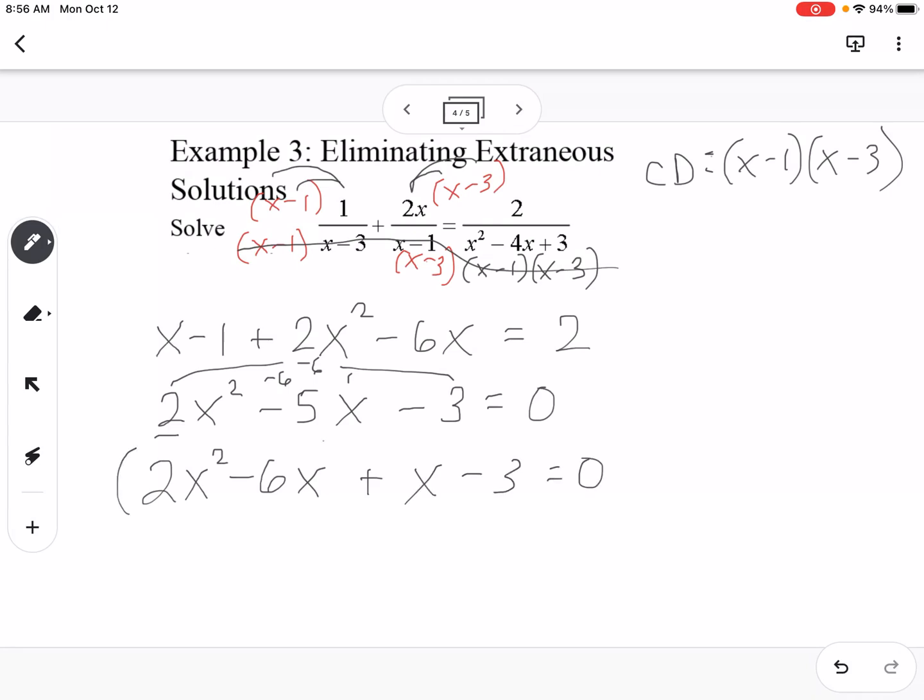Then I group the first two terms and the last two terms. I can take out a 2x and get x minus 3. I can take out a 1 and get x minus 3. So my factors are 2x plus 1 and x minus 3, which means my solutions, so if I set each parenthesis equal to 0 and solve, I would get negative 1 half and positive 3.